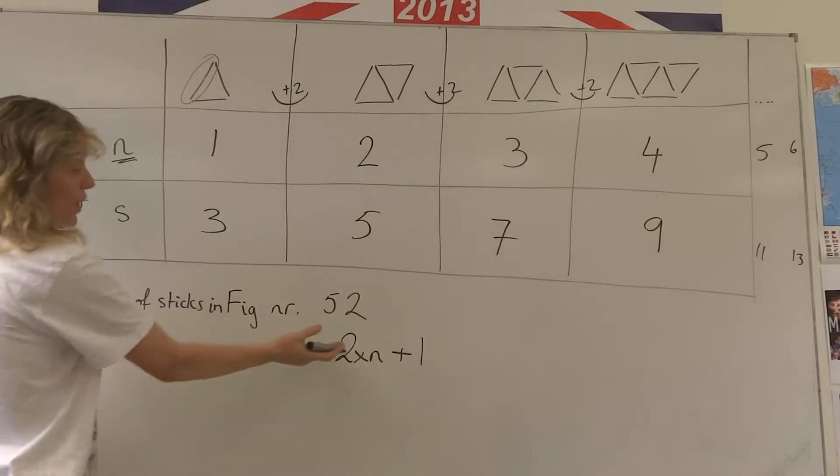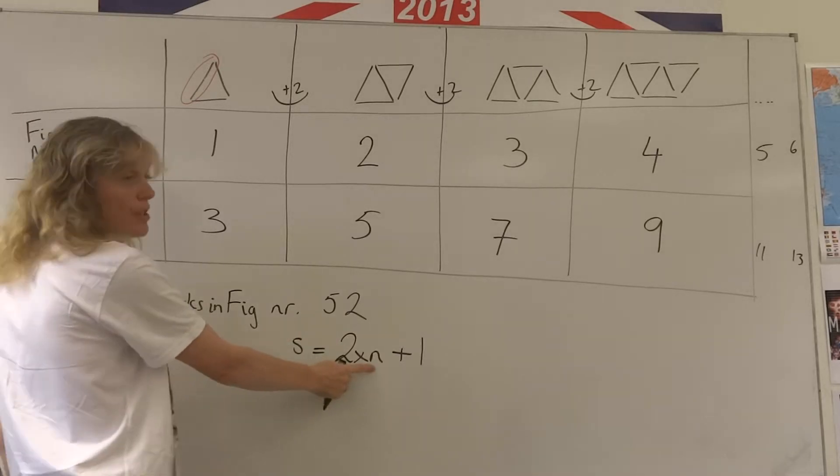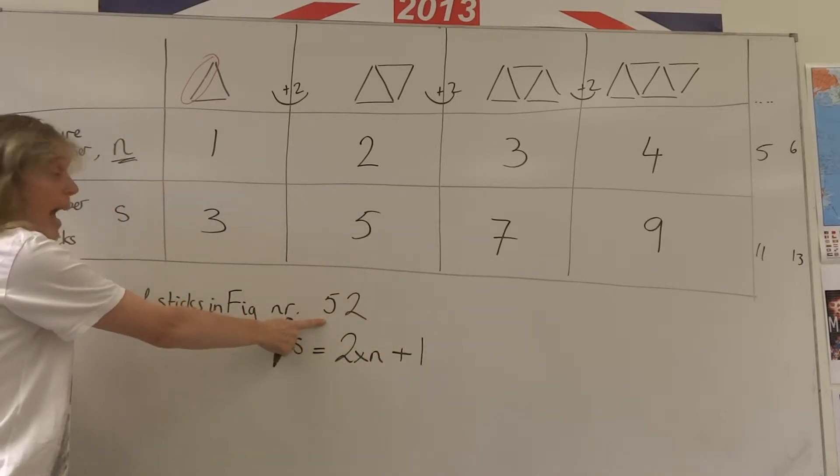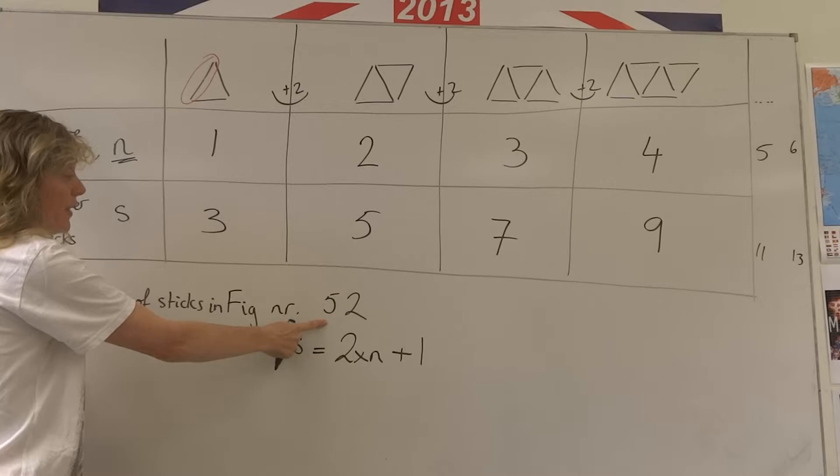So the formula for number of sticks is two lots of n plus one. So now it's very easy to work out how many sticks there are in figure number 52.